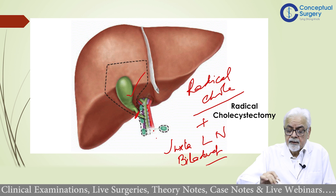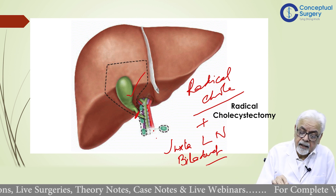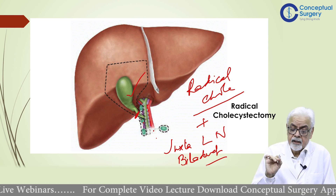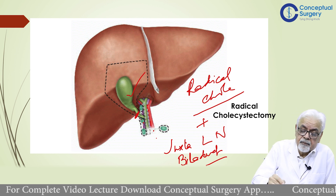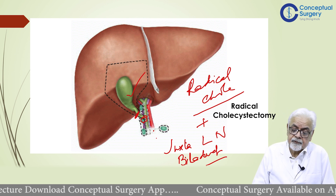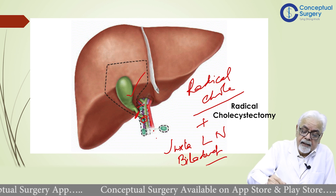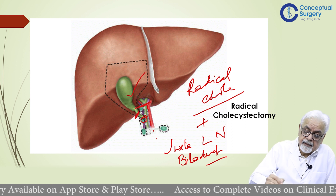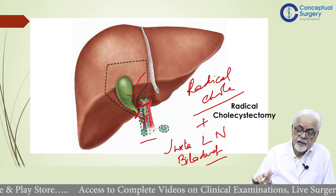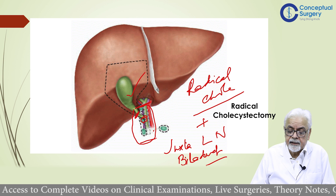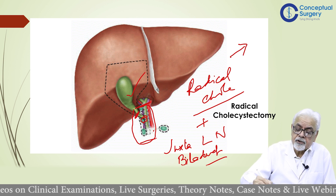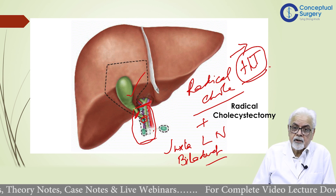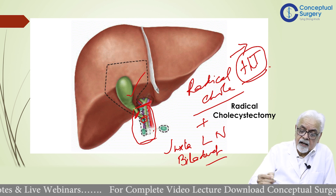In a patient with CA gallbladder where the cystic duct is uninvolved, bile duct excision is not done. But in cases where CA gallbladder has resulted in obstructive jaundice, the lesion has extended to involve the bile duct. After assessing resectability, we remove the bile duct — ensuring the proximal divided end is free of malignancy — right up to where it disappears behind the duodenum. We then re-establish biliary drainage by hepaticojejunostomy.